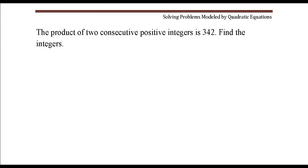Let's let the first number be x, then the next consecutive number would be x plus 1. And according to this first sentence, the product of these two numbers is 342.